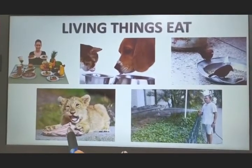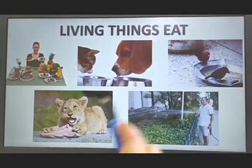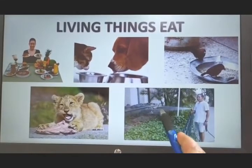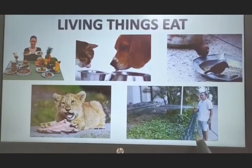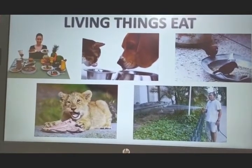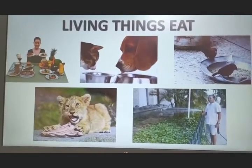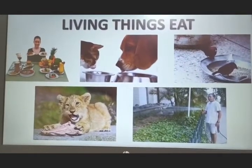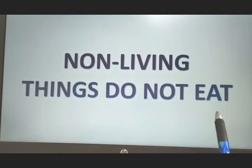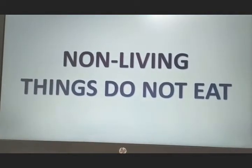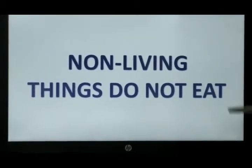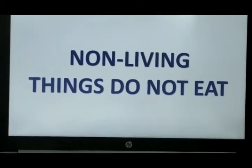Animals get their food from plants and other animals. Plants make food for themselves with the help of air, water, and sunlight. You must have noticed that plants dry up if they are not watered regularly. Non-living things, on the other hand, do not eat food. They do not need food or water to survive.